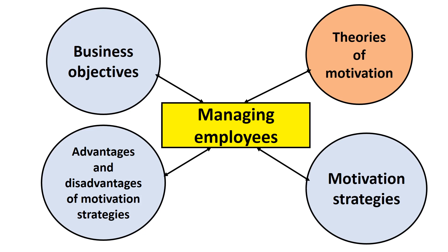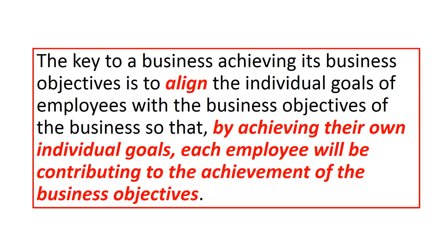Later on, we'll look at the strategies that managers can use to motivate their employees, and we'll see how these strategies are supported by each of these different theories of motivation. Each of these three theories proceeds on the basis that employees will be motivated to achieve the objectives of a business if the achievement of those objectives is consistent with employees satisfying their own needs or achieving their own goals. The key to a business achieving its objectives is to align the individual goals of each employee with the business objectives, so that by achieving their own individual goals, each employee will be contributing to the achievement of the business objectives. The difference between the three theories is in their conception of what motivates employees.